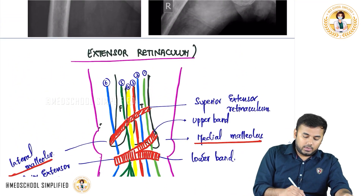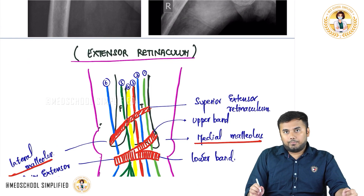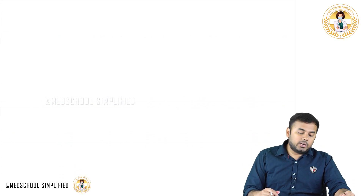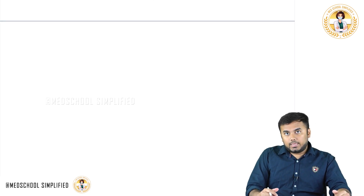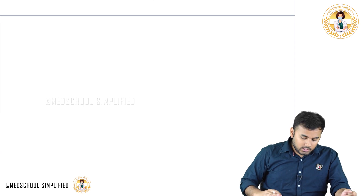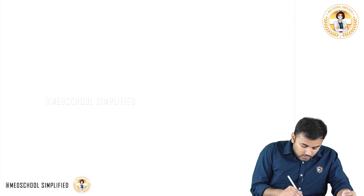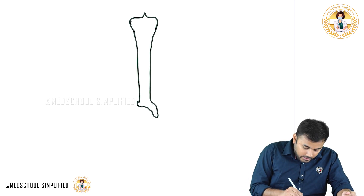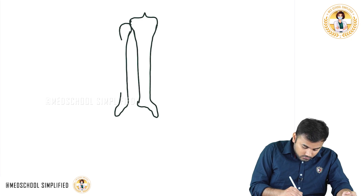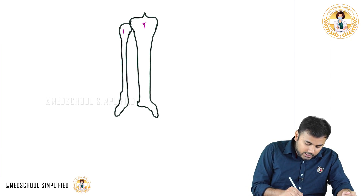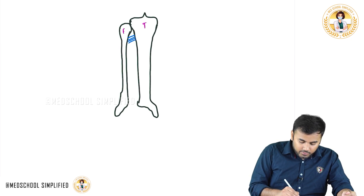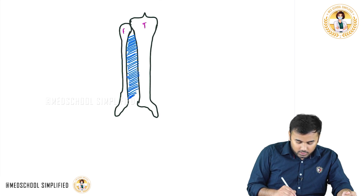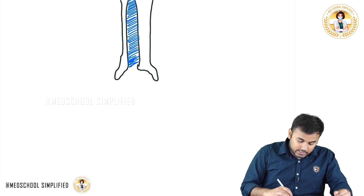Now after this, the next important thing we shall be discussing is the anterior tibial artery — its course and the branches it gives. Let me draw the tibia bone and fibula bone. Between the tibia and fibula you have got a membrane called interosseous membrane. Let me also draw the leg with the medial malleolus and lateral malleolus.